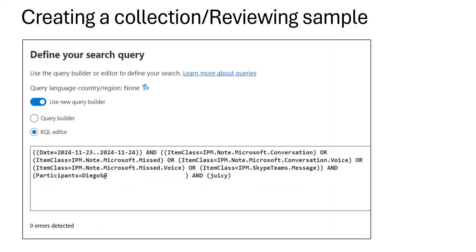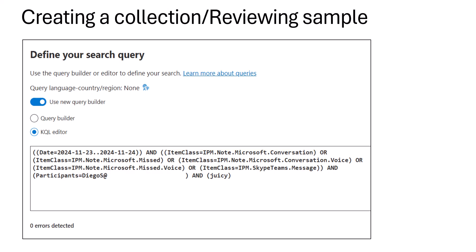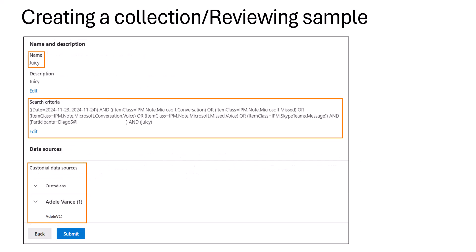We can also view the query in KQL — Keyword Query Language — format. The date range, the Teams message type filter (ipm.note.microsoft etc.), the participants field with Diego, and the keyword 'juicy' are all represented there. On the collection summary screen, I've named the collection 'juicy,' and you can confirm the search is applied to Adele Vance — important when you have multiple custodians.